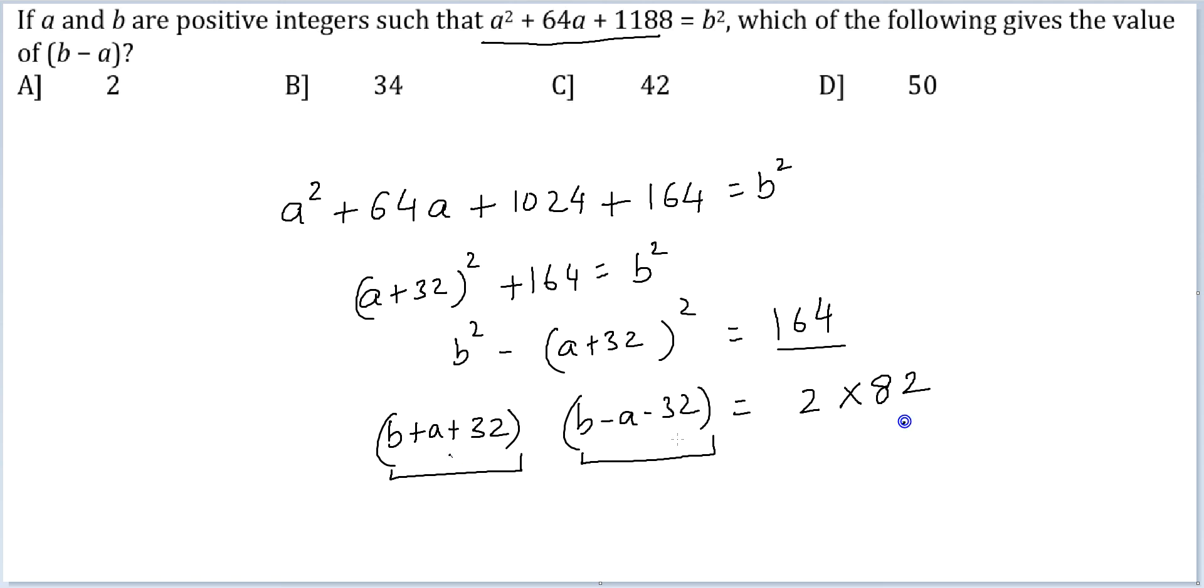This is equal to 82 and this is equal to 2. So b + a + 32 = 82, or b + a = 50, and b - a - 32 = 2, or b - a = 34.